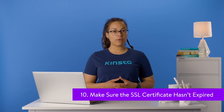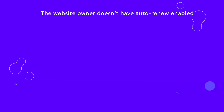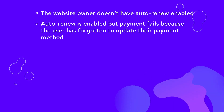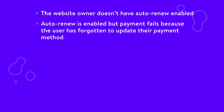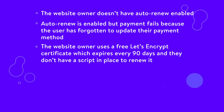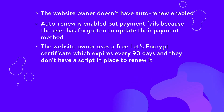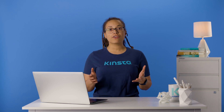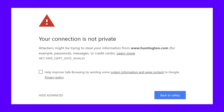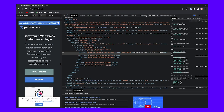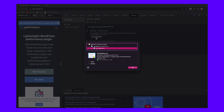SSL certificates expiring without the website owner's knowledge happens all the time. This can occur because auto-renew isn't enabled, because payment fails due to an outdated payment method, or because the site uses a free Let's Encrypt certificate — which expires every 90 days — without a renewal script. At Kinsta, we've automated this process so you never have to worry about free SSL certificates expiring. You can easily check a certificate's expiration date by opening Chrome DevTools on the site, clicking the Security tab, and clicking View Certificate. The valid from dates will show in the certificate information.